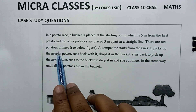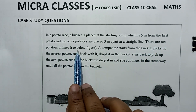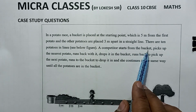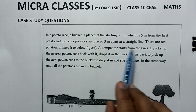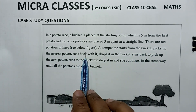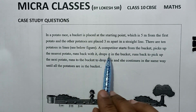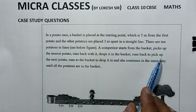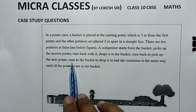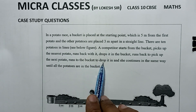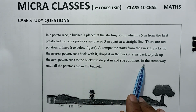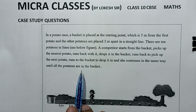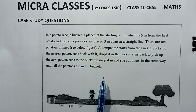There are 10 potatoes in line. See the figure below. A competitor starts from the bucket, picks up the nearest potato, runs back with it, drops it in the bucket, runs back to pick up the second potato, runs to the bucket to drop it in, and she continues the same way until all the potatoes are in the bucket.